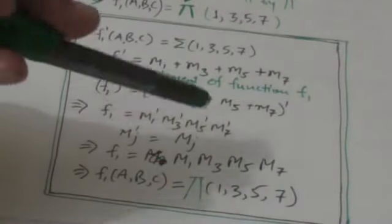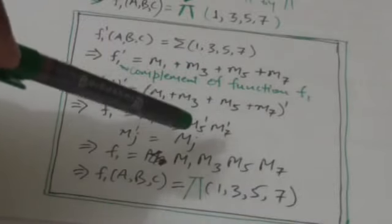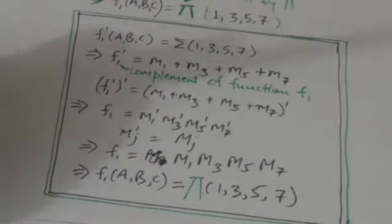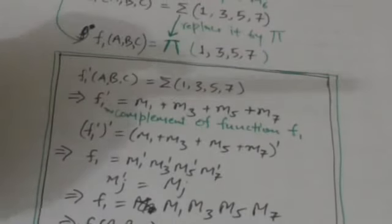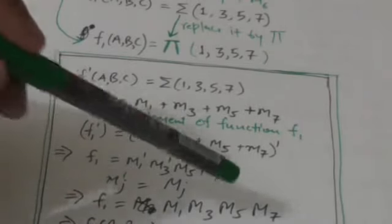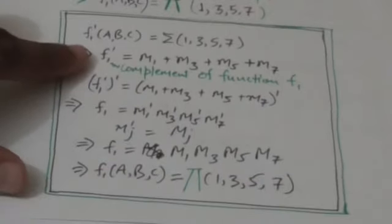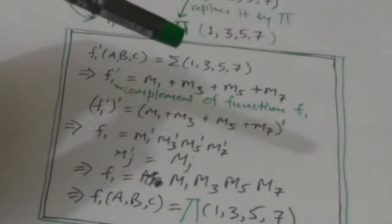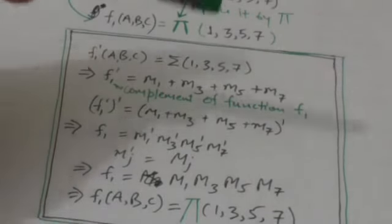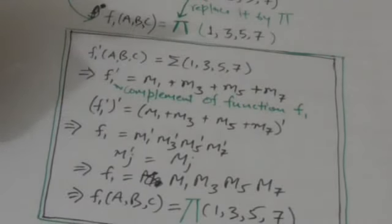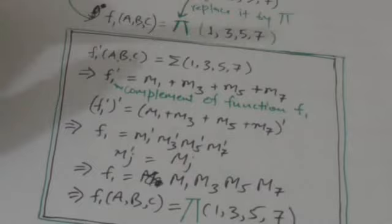So f1 can be represented as the product of maxterms of subscripts 1, 3, 5, and 7. This means the subscript numbers of the maxterms when the function is expressed as product of maxterms are the same as the subscript numbers of the minterms of the complement of the function. Thank you very much.